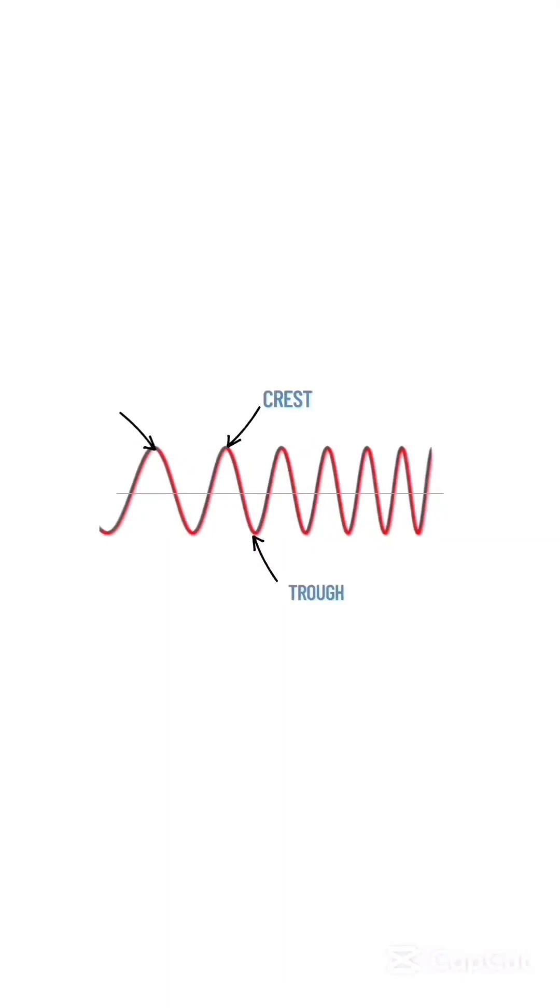The top part of the wave is known as the crest, and the bottom part of the wave is known as the trough. One crest and one trough form a one wave cycle.